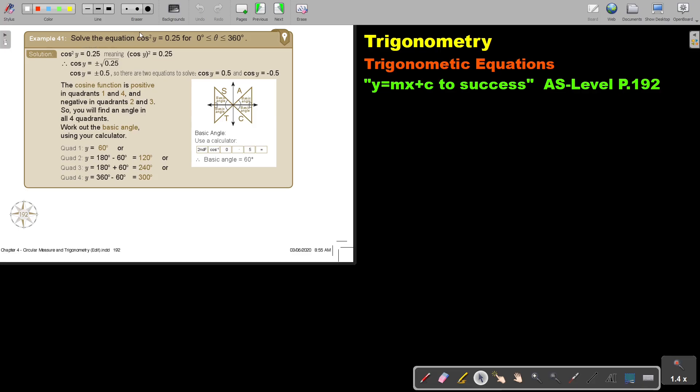Solve the equation cos²y equals 0.25 for β greater than or equal to 0, less than or equal to 360 degrees.